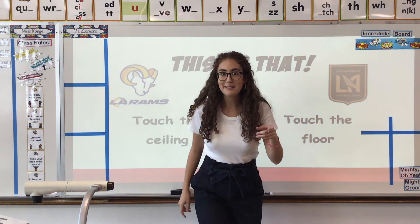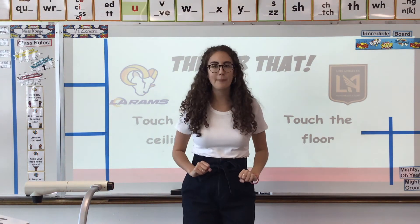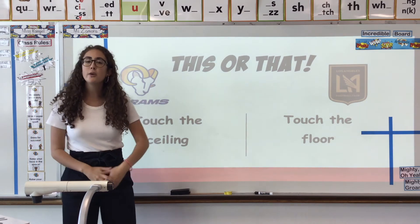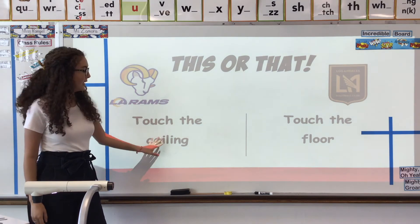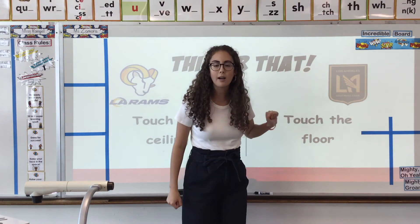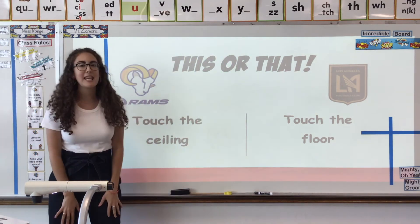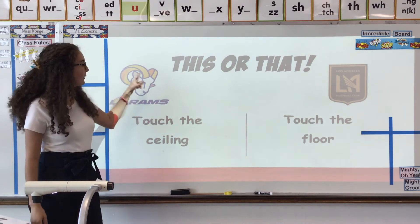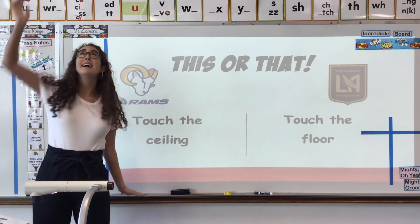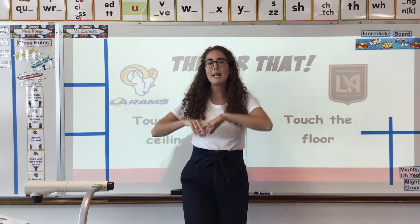Before we use the whiteboard, you need to stand up because it's a this-or-that for math. Do you prefer the LA Rams for football? Touch the ceiling five times. Or do you prefer the LA Galaxy for soccer? Touch the ground five times. Take your pick! I love football so I'm going to pick the Rams and touch the ceiling: 1, 2, 3, 4, 5. Awesome — we got our wiggles out.